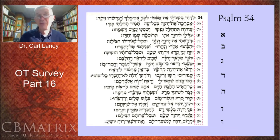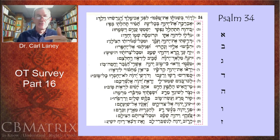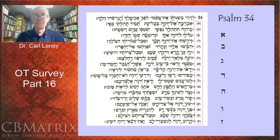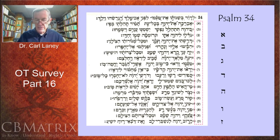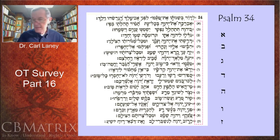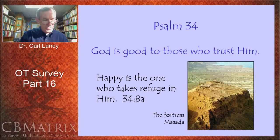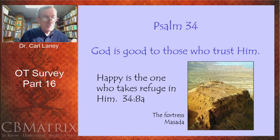Here is Psalm 34, and you can see the sequence of letters from the Hebrew alphabet. Aleph begins the first line, Beit begins verse 3, then Gimel verse 4, Dalet verse 5, He, Vav, and it continues. This pattern was designed to help the reader remember the psalm. It's the alphabetical psalm, and there are beautiful words in Psalm 34, which follows this pattern using the letters of the Hebrew alphabet.